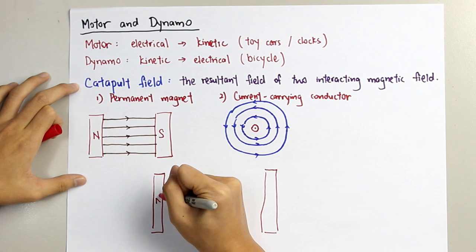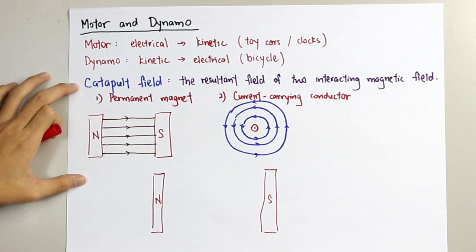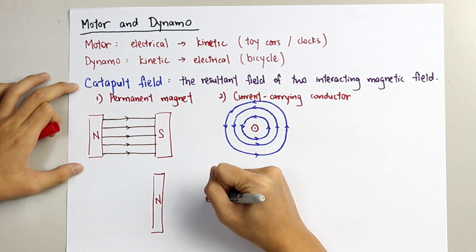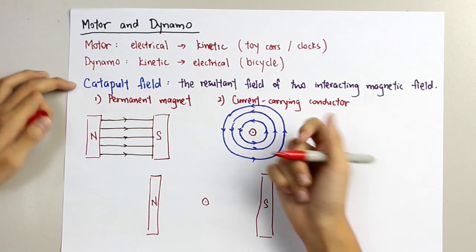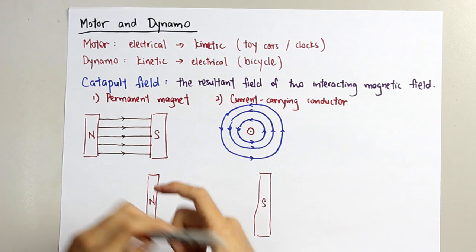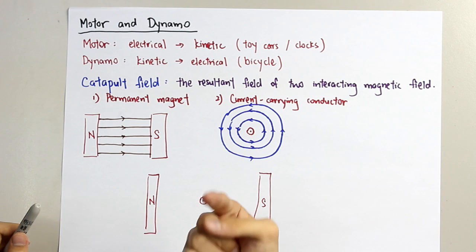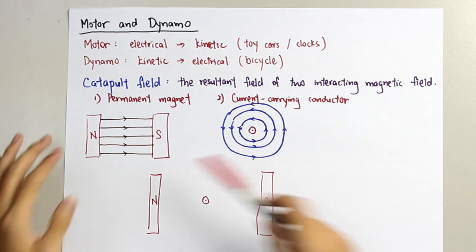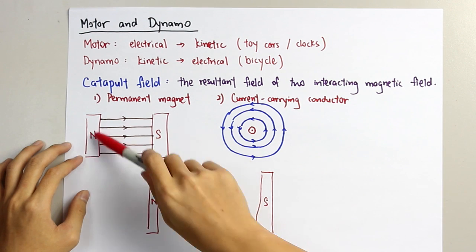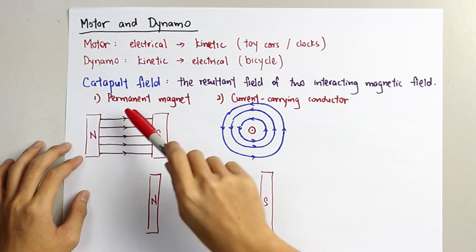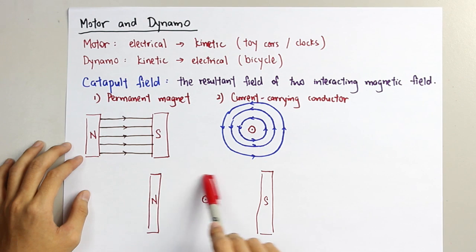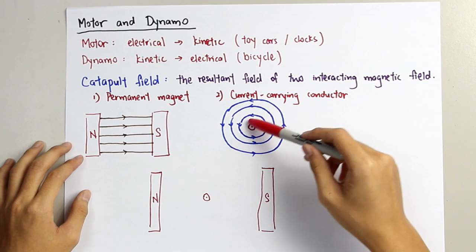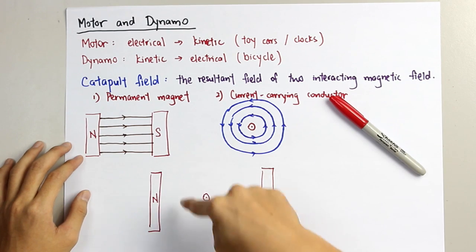Same setup — north pole, south pole — and I draw a wire in between in the same direction, with the current moving out from the paper. We know that from the permanent magnet, the magnetic field moves as a straight line from north to south. Whereas for the wire, it will be in this circular direction.